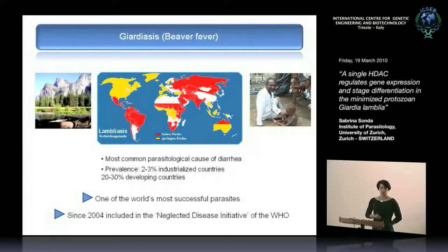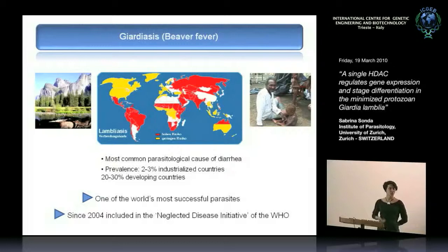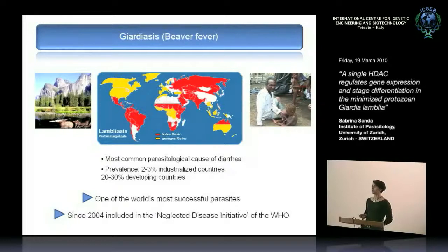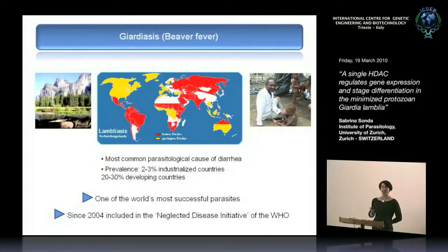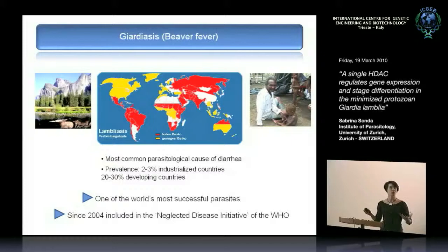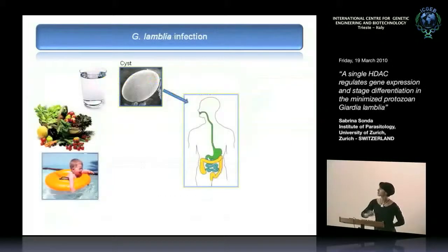The good news is that the disease can be treated — there's a spectrum of anti-parasitic antibiotics available. But getting these to remote villages is not a priority for large companies, so the problem remains. A major boost in research came in 2004 when the disease was included in the WHO initiative for neglected diseases. Overall, this map tells you the parasite is one of the most successful in its kind: widely spread and it does not kill its host, which is pivotal for its own survival.